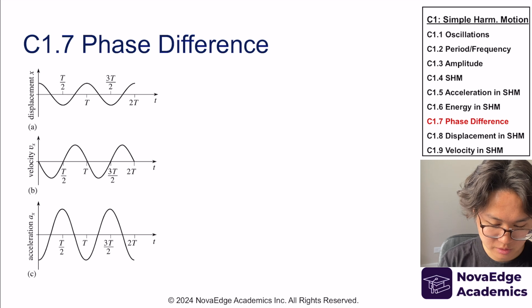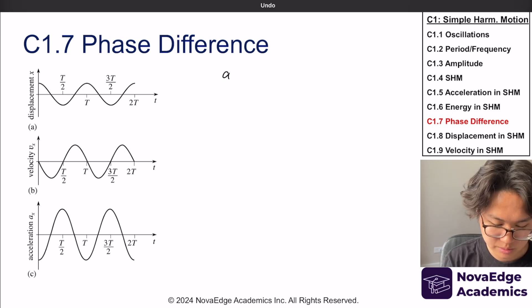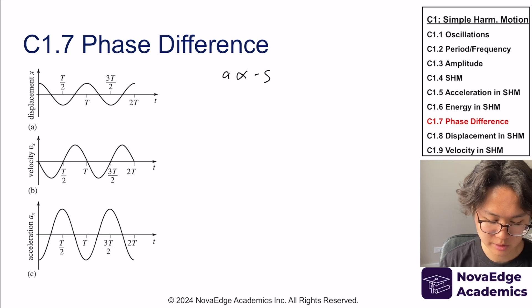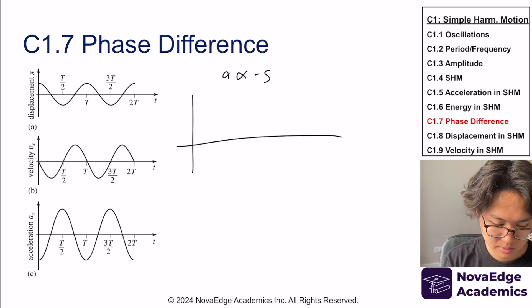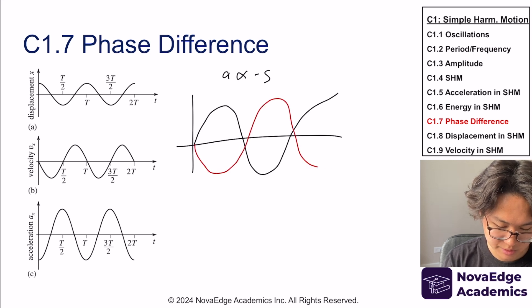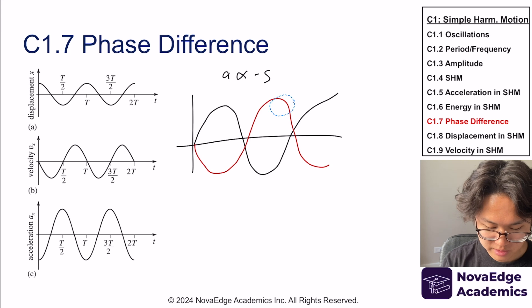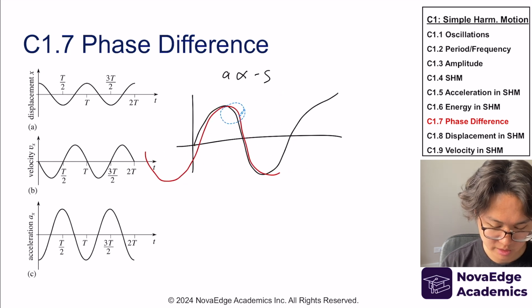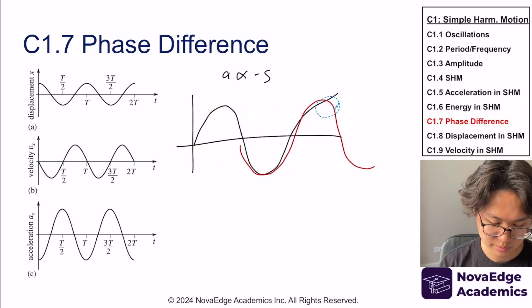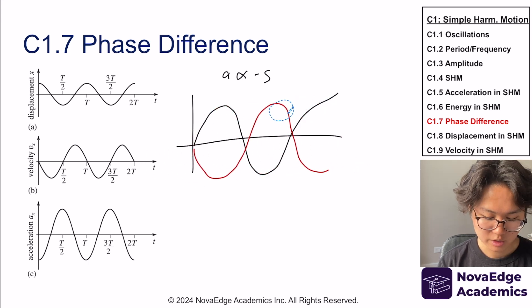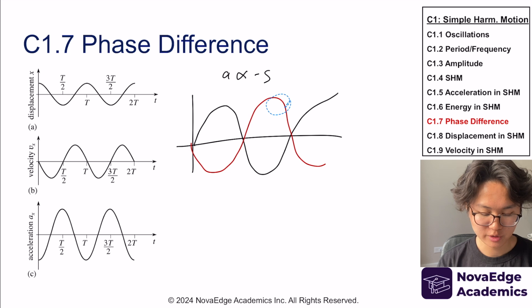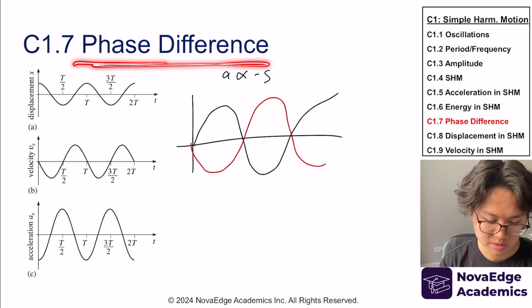We talked about how in Simple Harmonic Motion, acceleration is proportional and opposite to displacement. This actually means that if this is the displacement graph, this is the acceleration — they are off by a certain amount. And that certain amount is actually called the phase difference.